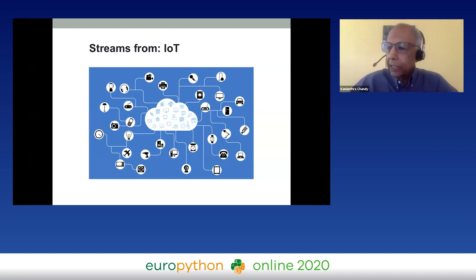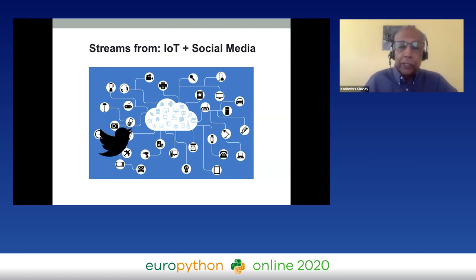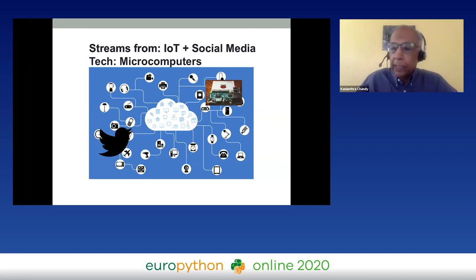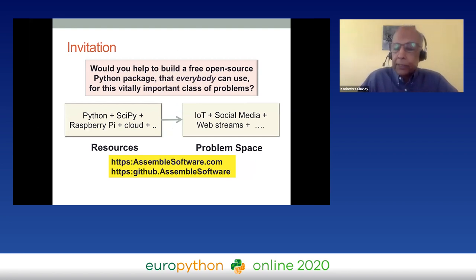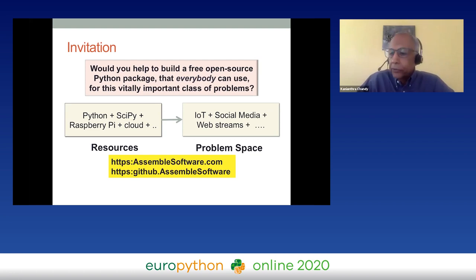Each sensor in the Internet of Things generates a data stream. An airplane generates a stream of its locations and a microphone generates an audio stream. Social media generates streams — Twitter generates streams of tweets. We now have technology to analyze streams: inexpensive onboard computers like the Raspberry Pi, powerful libraries like SciPy, and cloud-based Python API services.